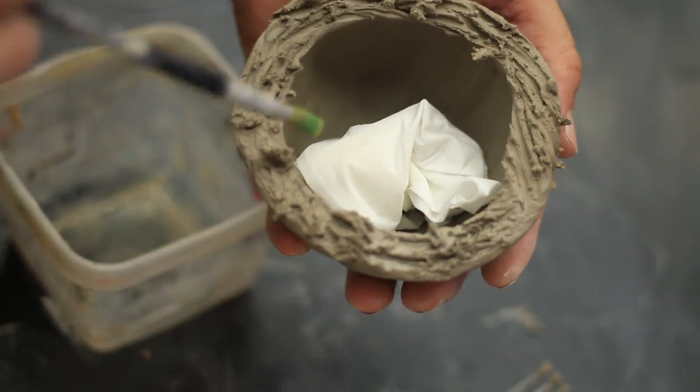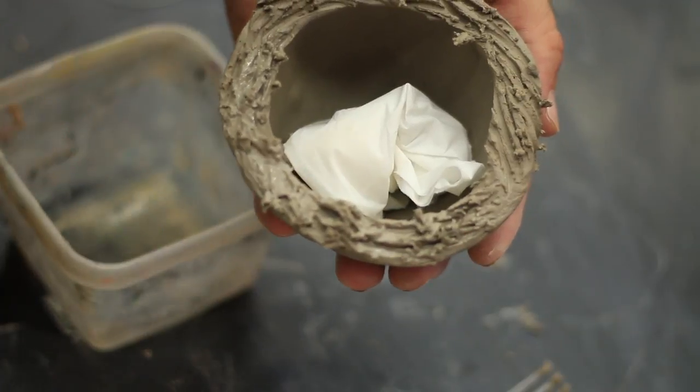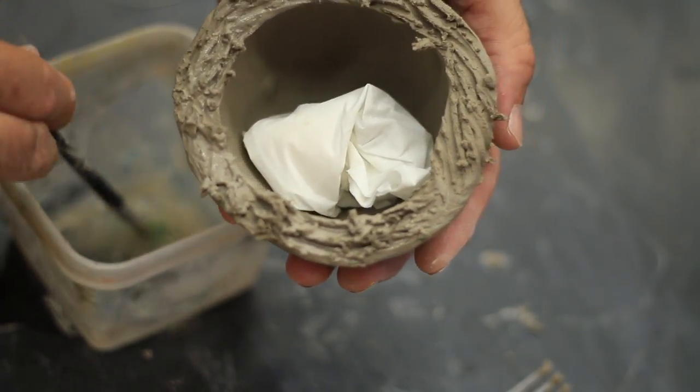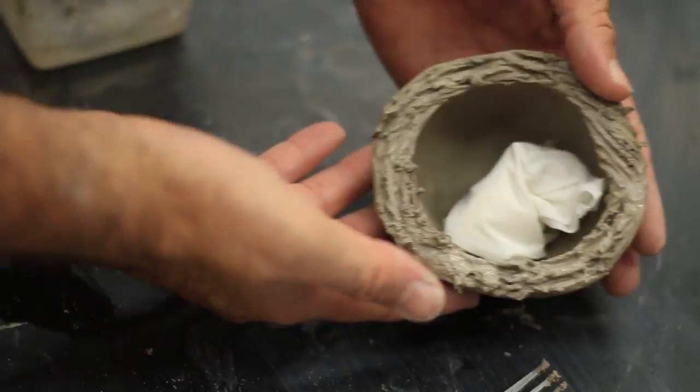After scoring, you want to generously coat the rim with water or slip. It might be a good idea to wait until after you've done this step to put in the clay beads, but if you have them in there right now, just be careful not to drip too much water on them.